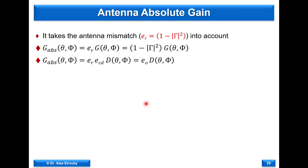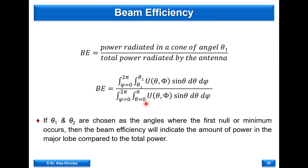Beam efficiency is the ratio of the power radiated in a certain solid angle (e.g., the main lobe) to the total power radiated by the antenna. It indicates how much of the radiation energy is concentrated in the main lobe versus the total, providing another measure of the antenna's directivity.